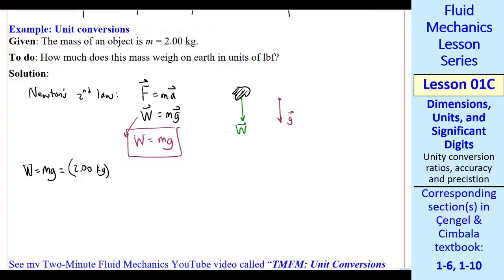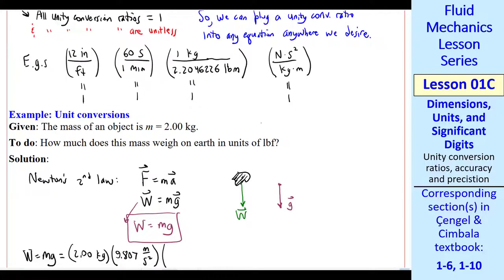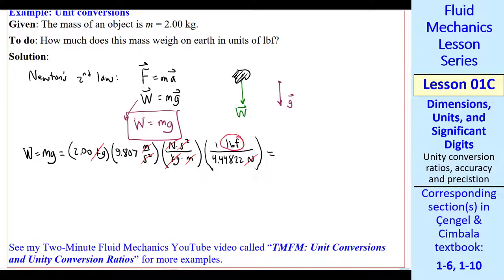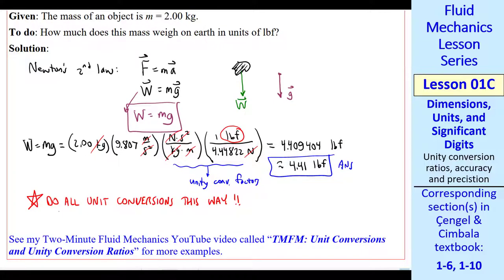Plug in our numbers. m is 2.00 kilogram. g is 9.807 meter per second squared. Now let's use this unity conversion factor that we talked about previously. A newton second squared is a kilogram meter. And you can look up this conversion factor. One pound force is 4.448 newtons. I cross off units, top and bottom. Kilograms cancel, meters cancel, second squareds cancel, and newtons cancel, leaving us with pound force, which is what we want. Plug this into my calculator. I get 4.409404 pound force. I'll approximate that as 4.41 pound force. This is my final answer to three significant digits.